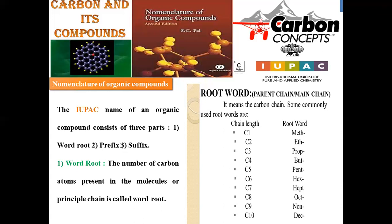These three - root word, prefix, and suffix - are the important parts in accordance with IUPAC to assign naming for any given organic compound. The word root refers to the number of carbon atoms present in the molecule or principal chain. For example: one carbon = meth, two carbons = eth, three carbons = prop, four carbons = but, five carbons = pent, six carbons = hex, seven carbons = hept, eight carbons = oct, nine carbons = non, ten carbons = dec.